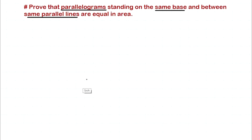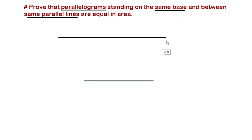We can understand this better with the figures. Let's say we have one line and another line, and these two lines are parallel with each other. Now let's name these two lines — this line is AB and this line is CD. So these two are our parallel lines. Now what we are going to do is make a parallelogram on the base AB.